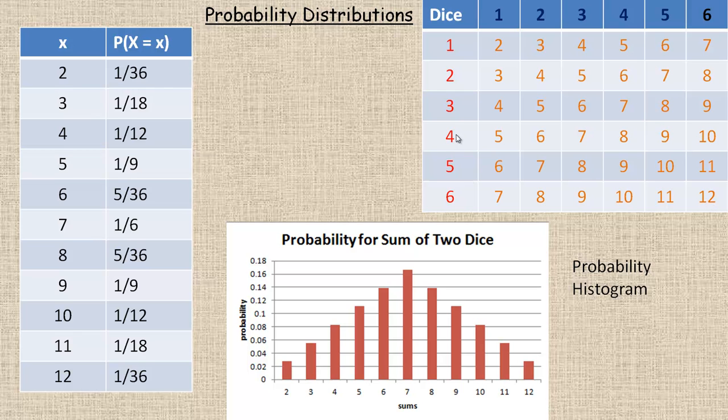So for example, I get four on one dice, maybe we'll call it the red dice, and three on the blue dice. Four and three add to seven. So there's one of the possible outcomes.